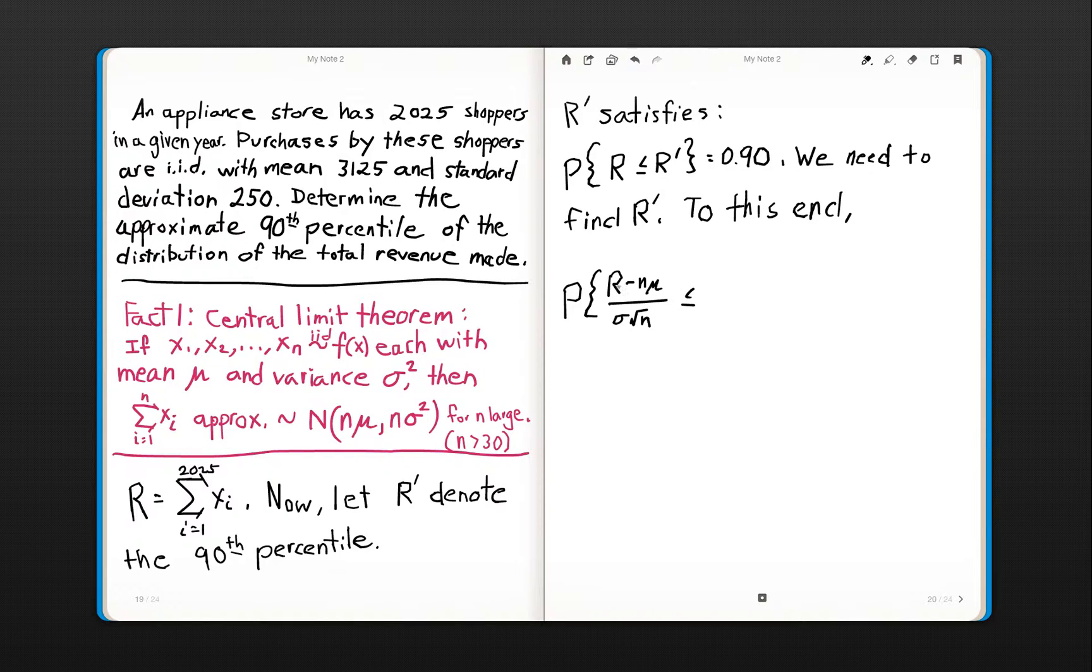What we have here is the probability of R minus its mean. We already said that R is distributed with mean nμ and variance nσ². Here you have to be careful. This is a variance, so to get the standard deviation, we take the square root of nσ², which is σ times the square root of n. That should be less than or equal to R' minus nμ divided by σ times the square root of n.